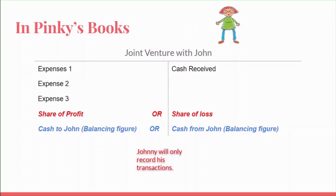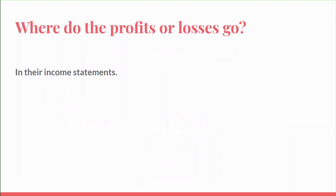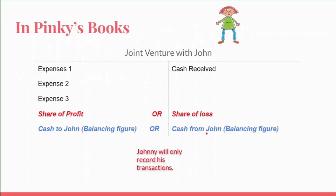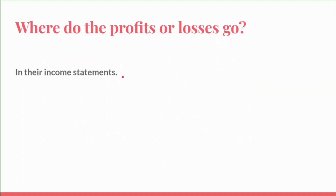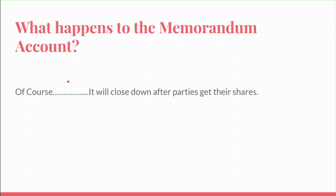After completing the joint venture account, we look at where the profits and losses go. For example, where would the share of profit go in Pinky's books? It will go in her income statement, added under the heading 'other incomes.' The memorandum account closes down automatically after the parties receive their shares.